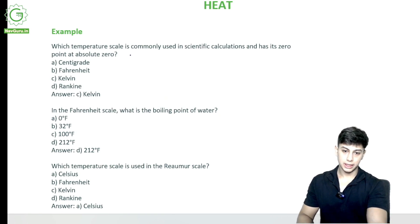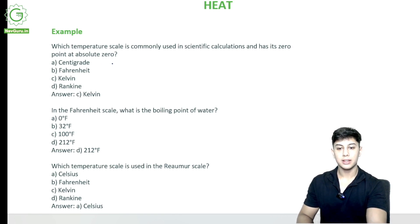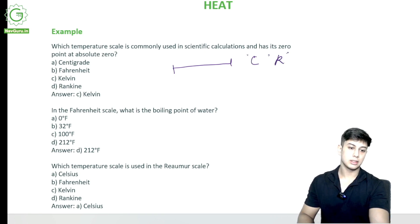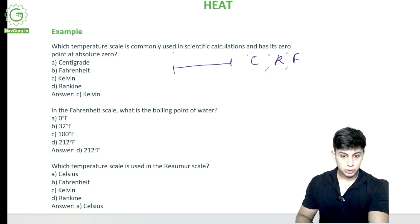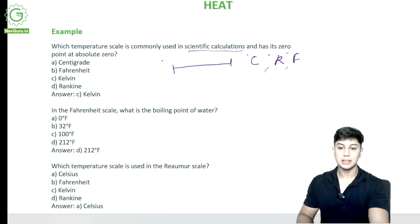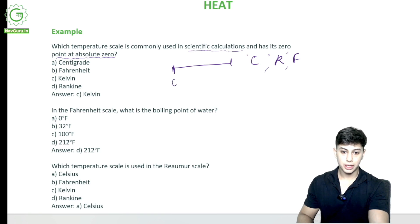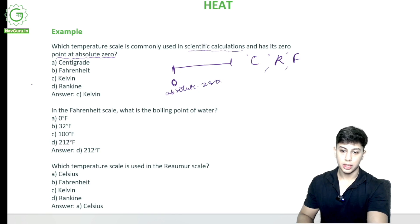Which temperature scale is commonly used in scientific calculations and has its zero point at absolute zero? Temperature scales were of many types — the Celsius scale, the Réaumur scale, the Fahrenheit scale, and others. This one is used in scientific calculations and has its zero point at absolute zero. The answer is Kelvin. Whenever they mention scientific calculations, it is Kelvin because internationally it is Kelvin.